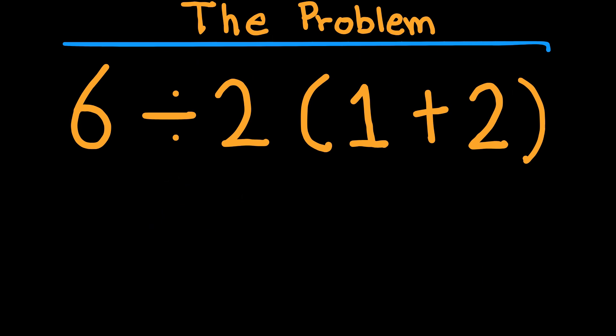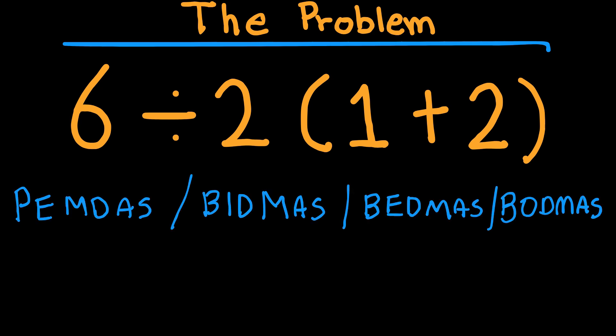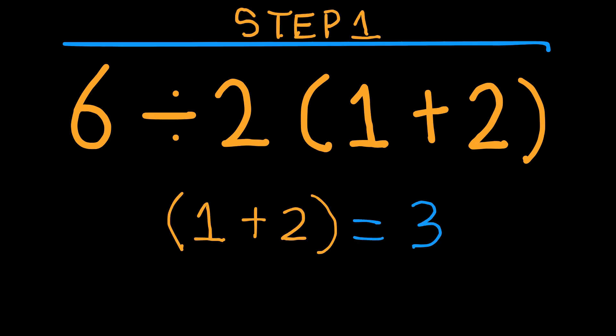Let's look again at the expression 6 divided by 2, open brackets, 1 plus 2, close brackets. Let's solve it step by step using PEMDAS, also known as BODMAS in other countries. Inside the parentheses, we have 1 plus 2, and 1 plus 2 equals 3.